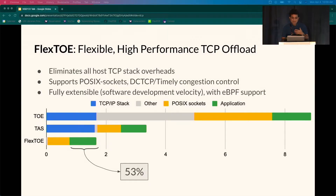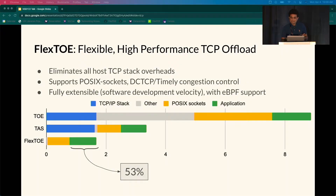Flexto supports unmodified applications with POSIX sockets compliance and interoperates nicely with other TCP stacks. As a TCP offload, it is extremely robust to packet loss and congestion, and implements widely used data center congestion control algorithms like Timely and DCTCP. Flexto is also fully extensible — it's just software written in C and retains the advantages of a software development model. Upgrading Flexto is as easy as restarting a user space application, and it also supports dynamically offloading eBPF-based extensions for additional flexibility.